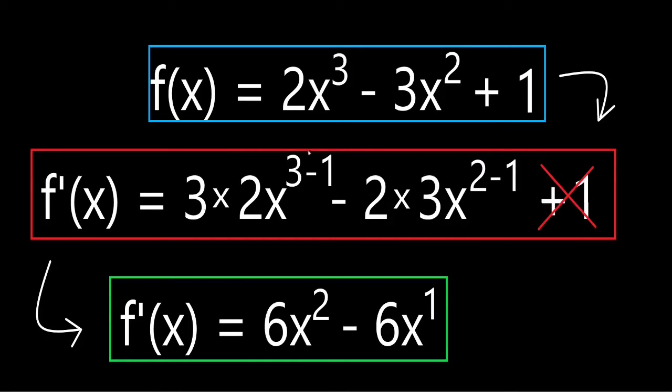And in the end, you simplify this term and this term, and you write them down. Like, 3 times 2x would be 6x to the power of 3 minus 1 is 2: 6x to the power of 2. And then, there's 2 times 3x, which is once again 6x, to the power of 2 minus 1. If you have to write it down, you can even cancel that 1. You don't need to write it down. It would be just 6x.